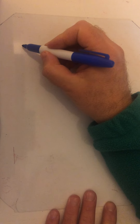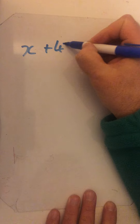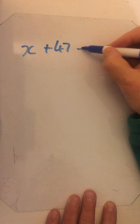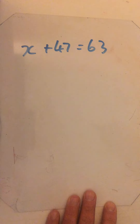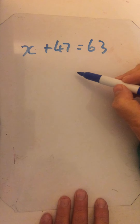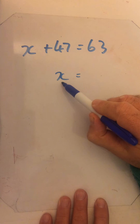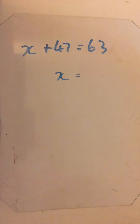Carrying on from the previous lesson on solving equations, we're going to do two-step equations this time. Let's have a very quick reminder. We did things like x plus 47 equals 63, just slightly bigger numbers than we're used to. We want to get x on its own on one side of the equation, using the balance method.